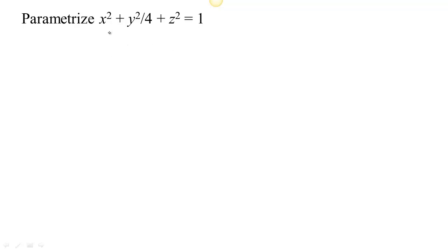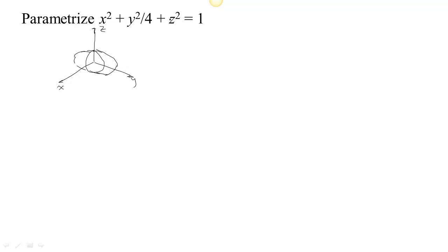We have this ellipsoid and we're trying to think about how to parametrize it. One thing I noticed is that this ellipsoid is kind of stretched in the y direction, but it has the same value — the same number under x squared as under z squared. So that means it's going to have a symmetry around the y-axis. If we draw a quick sketch: setting y equal to 0 we see a circle of radius 1, but setting x equal to 0 we have an ellipse in the y-z plane that's twice as long in the y direction. Setting z equal to 0 also gives an ellipse stretched in the y direction. So it still has symmetry around the y-axis.